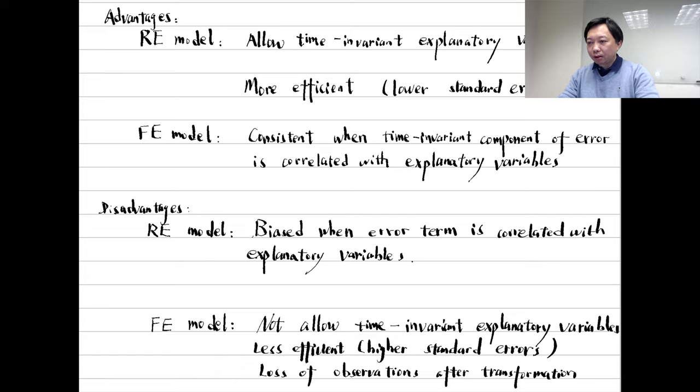We know that the advantages of the random effects are that we can estimate the coefficients of the time-invariant explanatory variables, and the random effects estimator is more efficient than the fixed effects estimator because the standard error of the beta is smaller in random effects models.